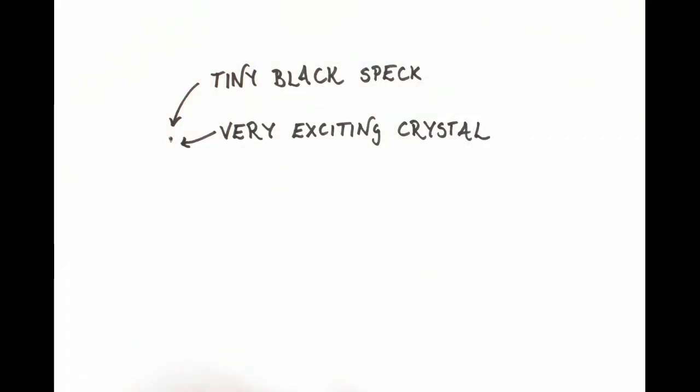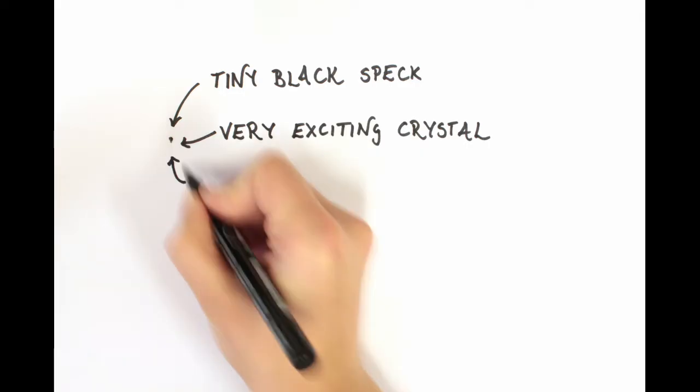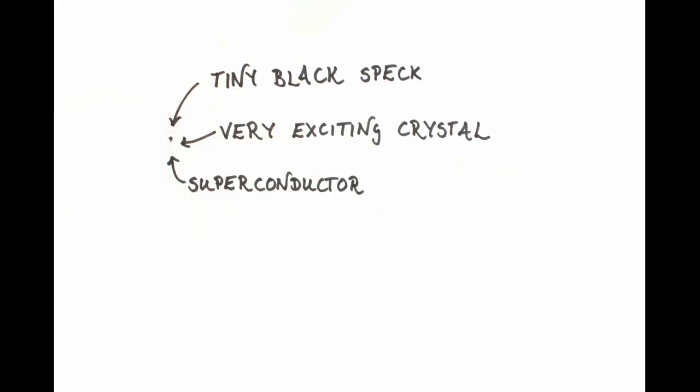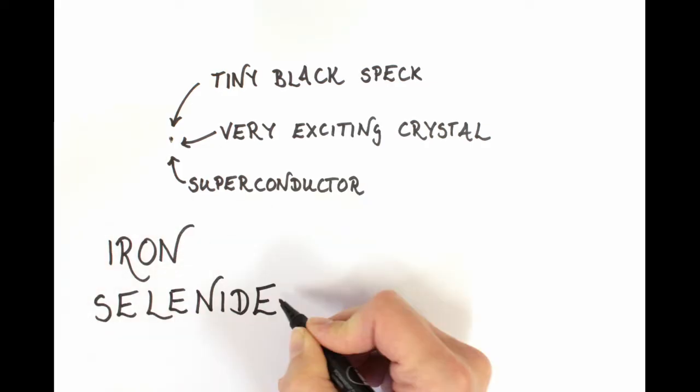For example, this is a piece of iron selenide. Not exactly impressive to look at, but it's an amazing material that has some really weird properties. If you cool it down to just above absolute zero, in fact, it's a superconductor.